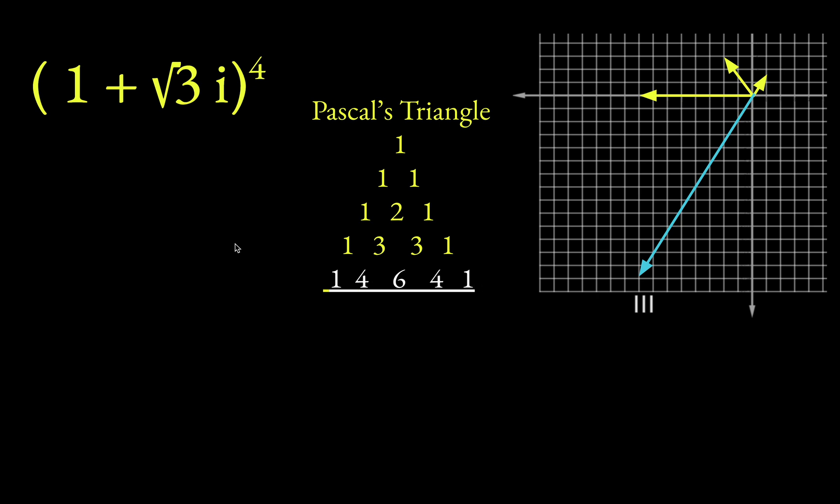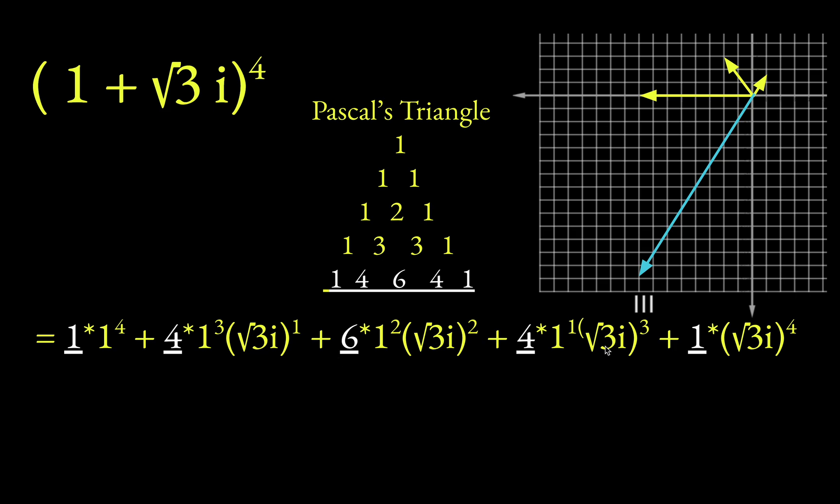What you do is you use those as your coefficients. So notice I've underlined them here, left them in white. My first term in the binomial, I raised to the fourth power. So there's 1 to the fourth. I did not write root 3i to the zeroth, because anything to the zeroth is 1. So I just didn't write it in the first term.